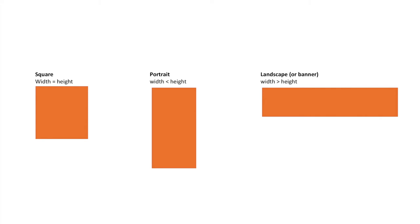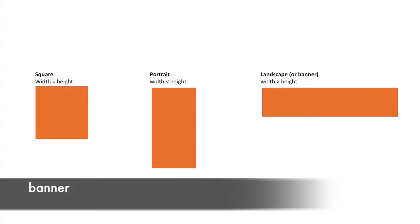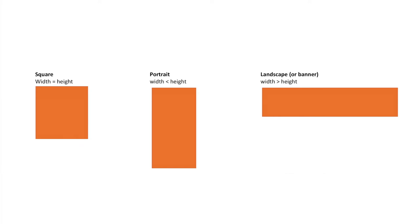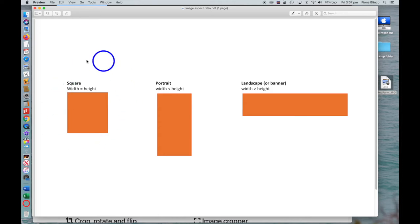So what are the three aspect ratios? There are square, portrait, and landscape. Square is where the width equals the height. Portrait is where the width is smaller than the height. Landscape — sometimes called a banner, header, or hero image — is where the width is greater than the height, and it's often used on websites. If your website calls for a landscape photo and you put a portrait in there, it's a bit like putting a square peg in a round hole — it's not going to fit well.